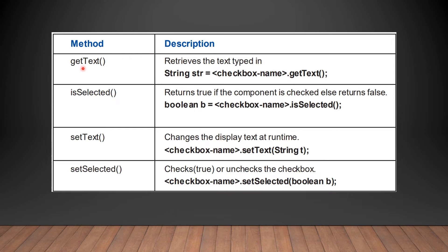The methods of JCheckBox — getText, isSelected, setText, setSelected — are the same as JRadioButton. getText retrieves the text in the checkbox. isSelected returns true if the component is checked, false otherwise. setText changes the display text at runtime. setSelected checks or unchecks the checkbox based on true or false. Note: getText and isSelected are getter methods; setText and setSelected are setter methods.